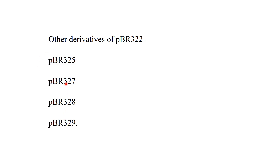The pBR327 has a copy number of 30 to 45 per E. coli cell. These derivatives have the same basic features as pBR322 but differ in some aspects, which is why pBR322 is considered the parent and grandparent of these other vectors.